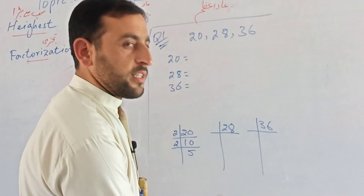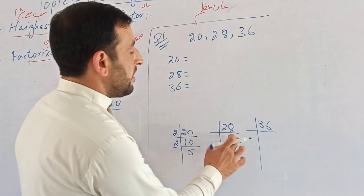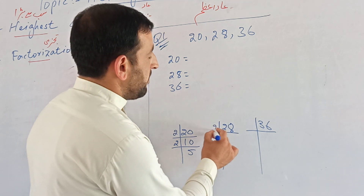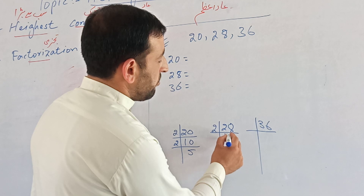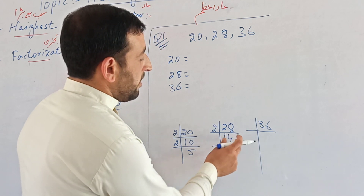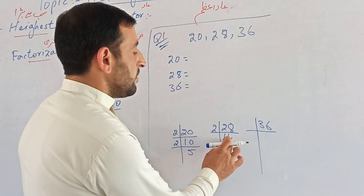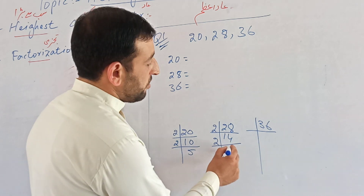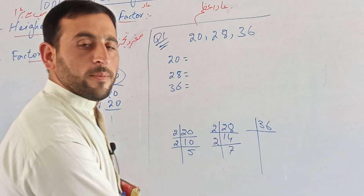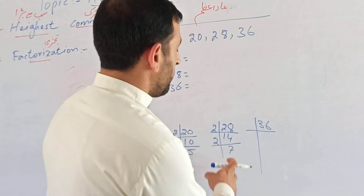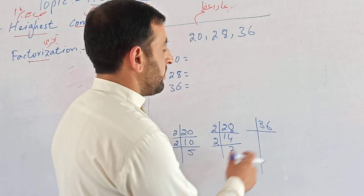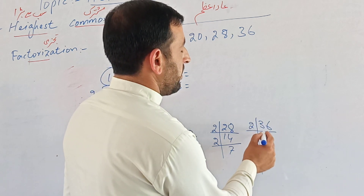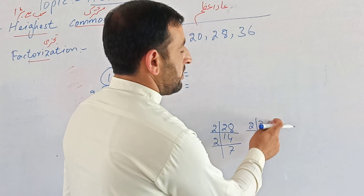For 28: 28 is divided by 2 to give 14. Then 14 is divided by 2 to give 7. Seven is a prime number, so we stop. So 28 equals 2 times 2 times 7. For 36: 36 is divided by 2 to give 18, then further divided, giving 2, 2, 3, and the remaining factor.